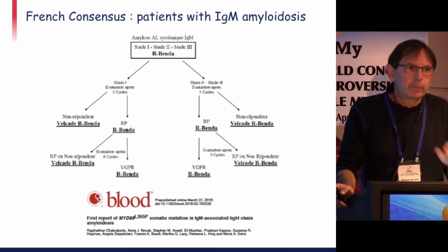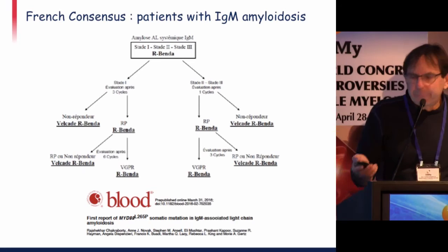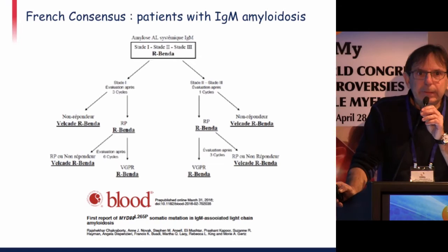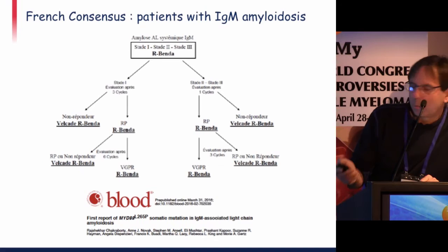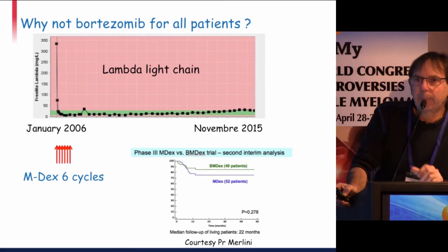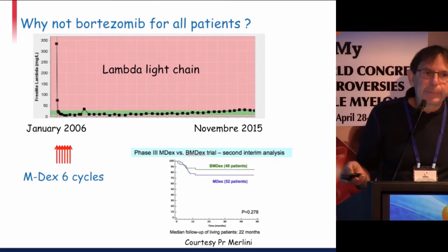For IgM AL amyloidosis, the same structure applies but we use rituximab and bendamustine plus bortezomib for non-responders. Interestingly, just months ago it was shown that AL amyloidosis with IgM carries the same mutations as Waldenström's macroglobulinemia. As for why not use bortezomib for all patients: with MDex you can achieve in about 20 percent of patients a very rapid and sustained response.